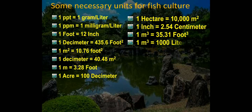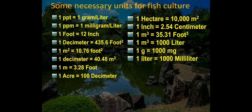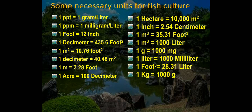1 cubic meter equals 1000 liters. 1 gram equals 1000 milligrams. 1 liter equals 1000 milliliters. 1 kilogram equals 1000 grams.